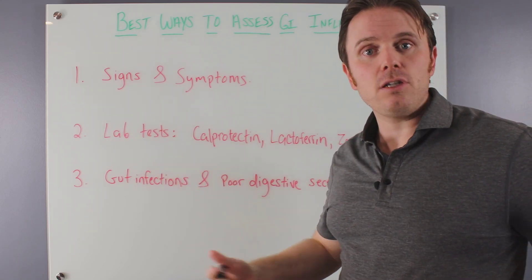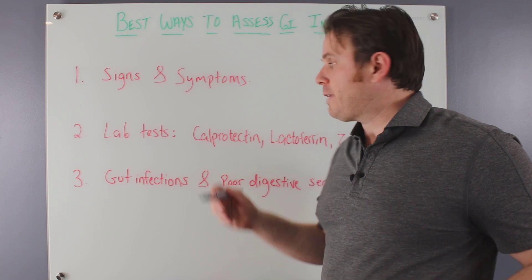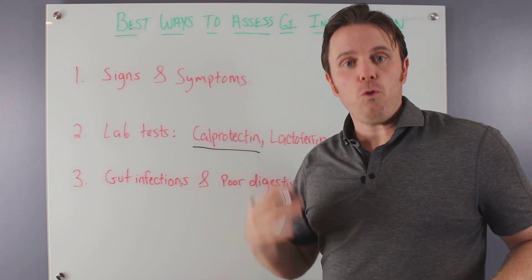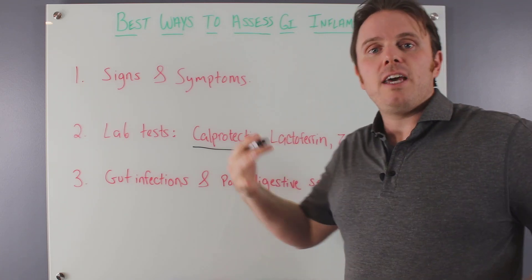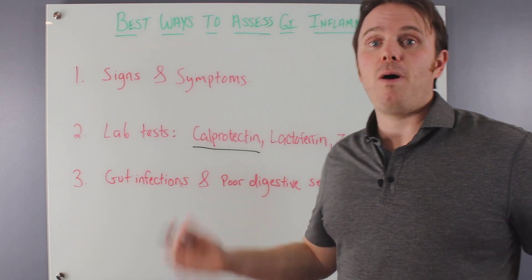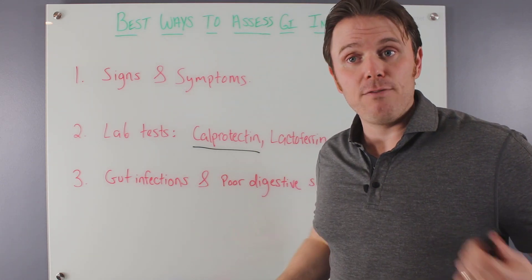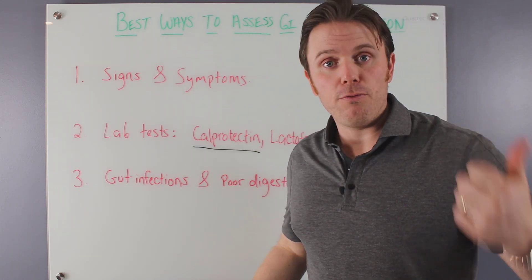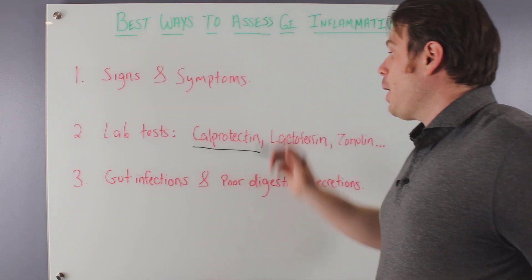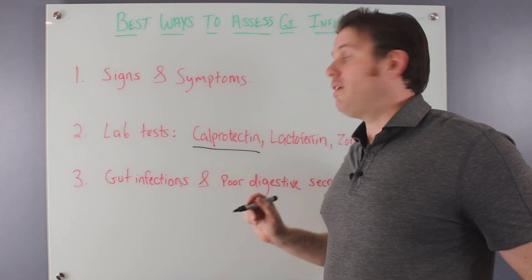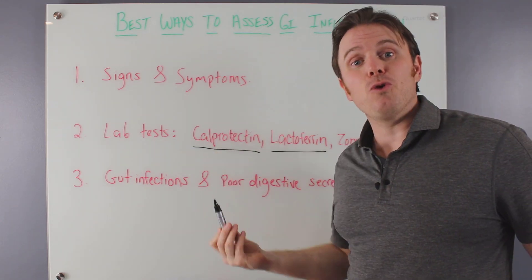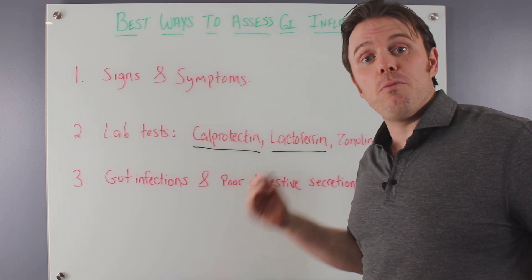We can assess gut function on labs. Calprotectin is like the CRP, or C-reactive protein, for the gut. Interleukins, cytokines, and white blood cells produce this protein calprotectin in response to inflammation in the environment — whether from food, infections, or just poor digestion in general. Calprotectin will increase with inflammation. We'll also see lactoferrin, a similar protein, go up with inflammation as well.